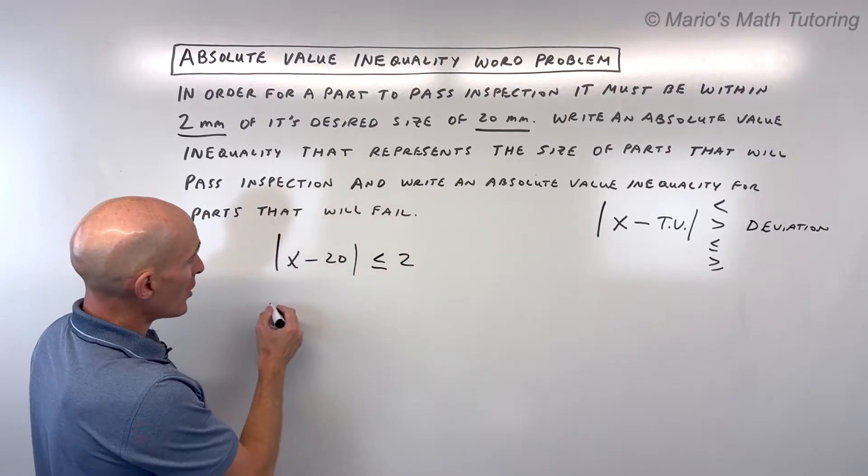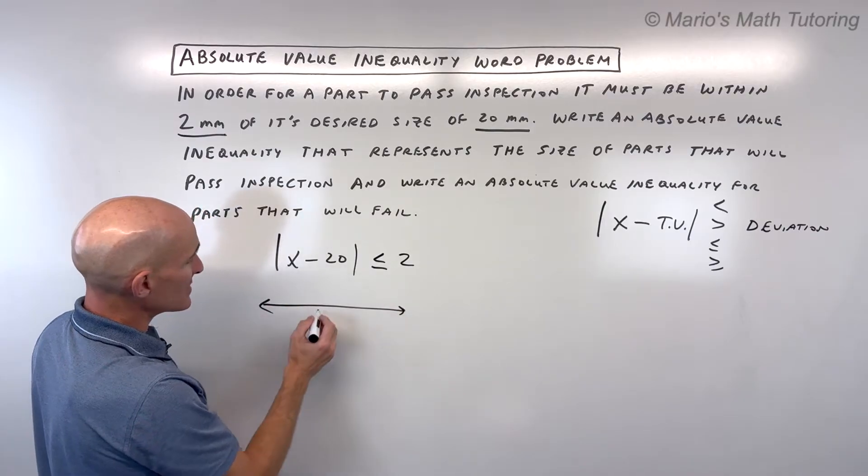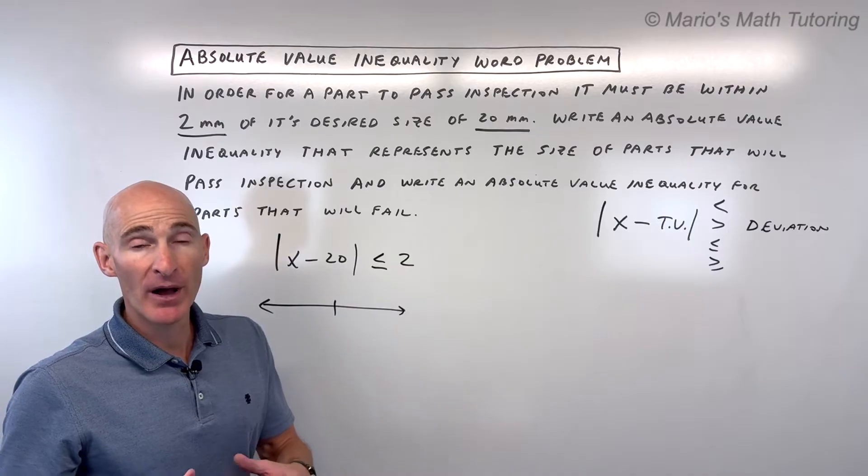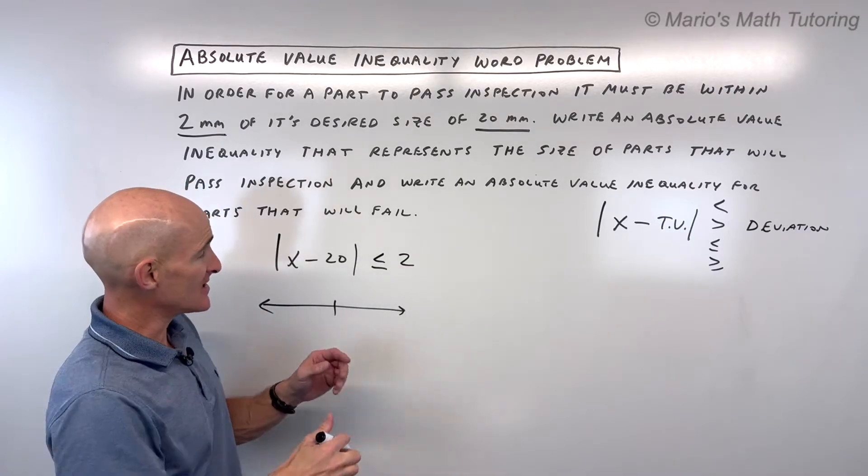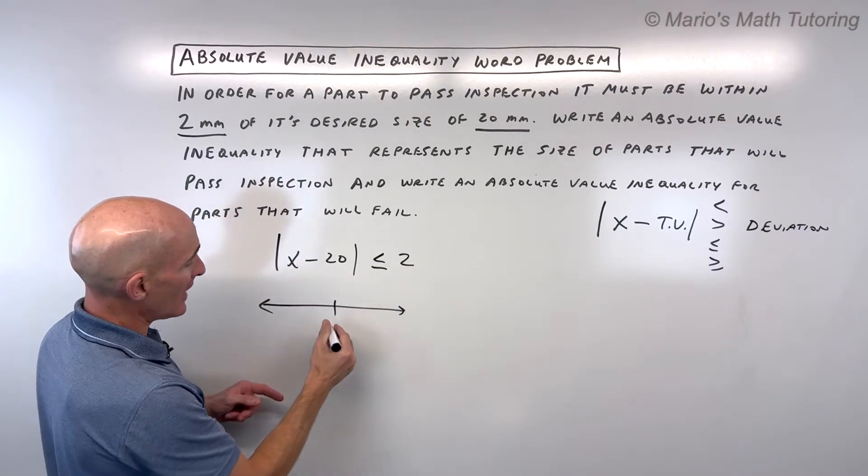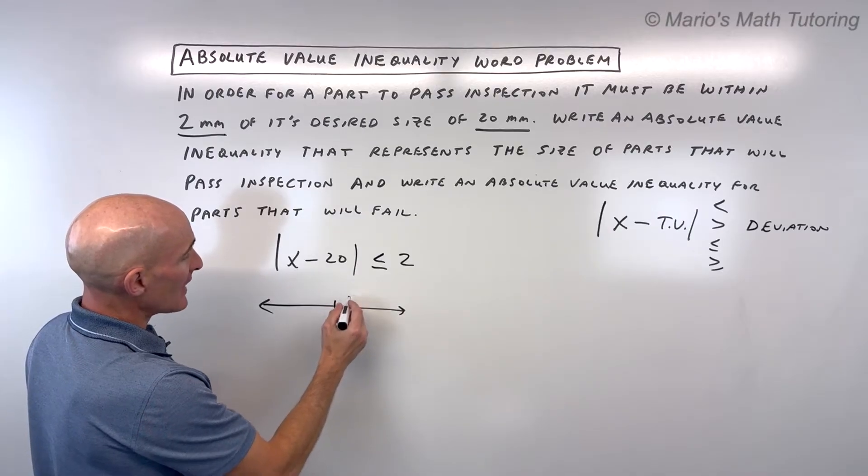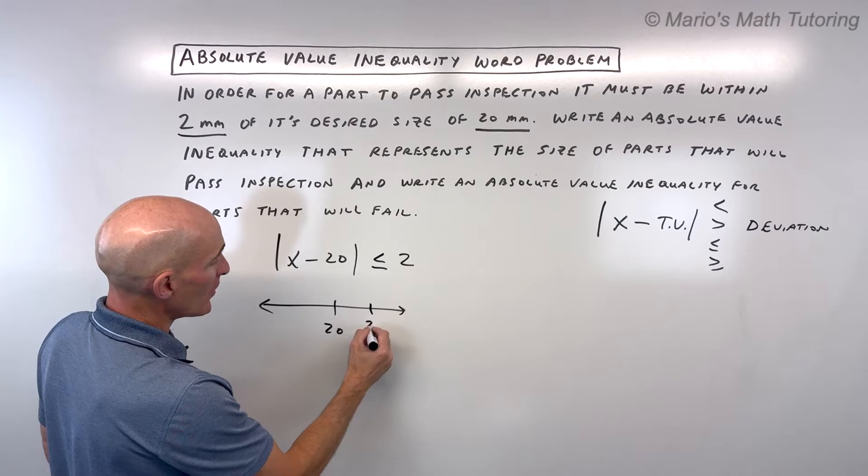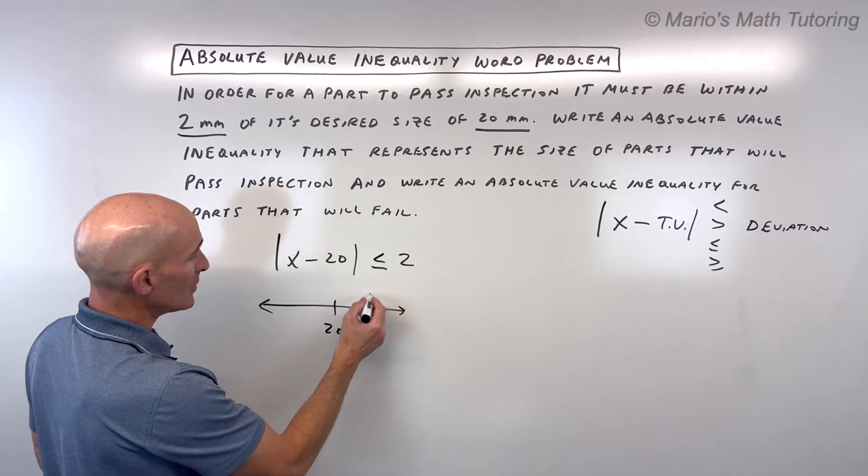Graphically, if you draw a graph of this, minus means the difference, but it also means the distance. It's saying the distance between some number and 20 is less than or equal to 2 millimeters away. So it could be here at 22,